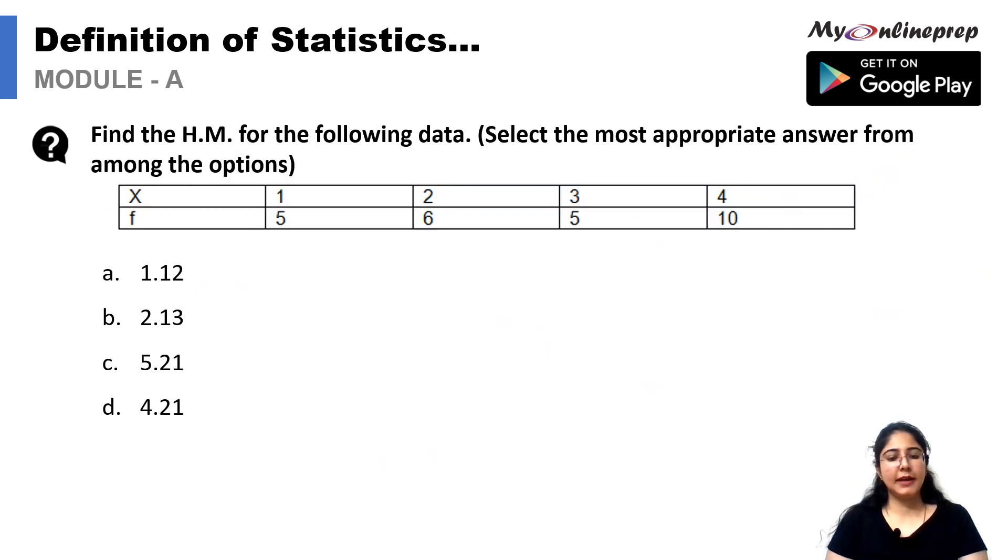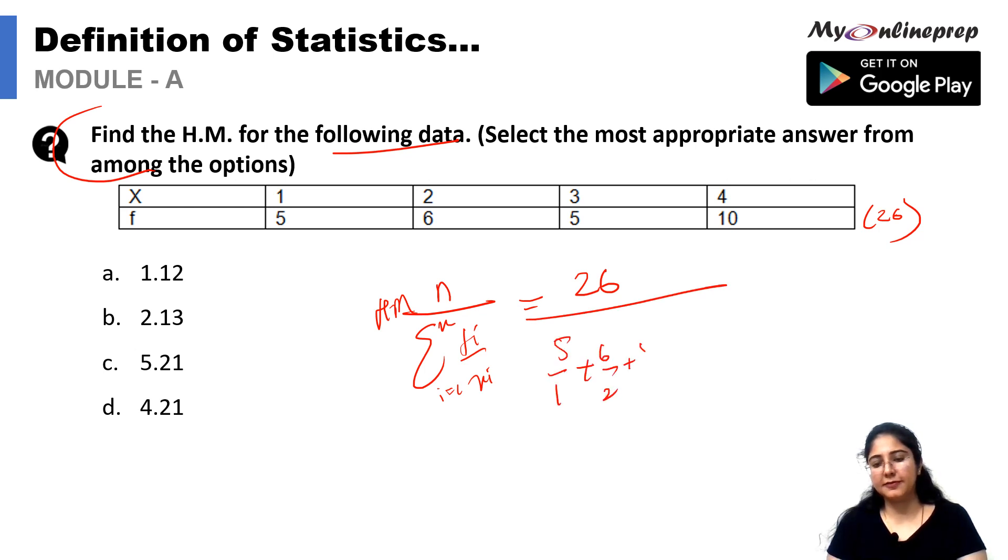In this question we have to find out harmonic mean for the given data. Formula would be harmonic mean equals n upon summation of fi upon xi, which equals 26 upon (5 by 1 plus 6 by 2 plus 5 by 3 plus 10 by 4), depending upon these two series. Simplifying this we will get 26 upon 12.1667, which means our answer is 2.137. Option B is the correct answer.